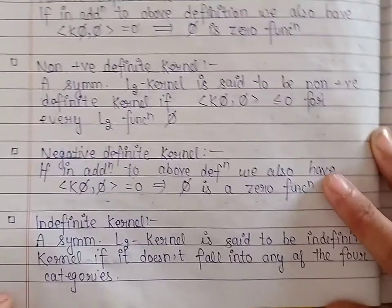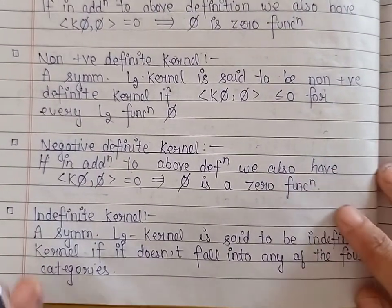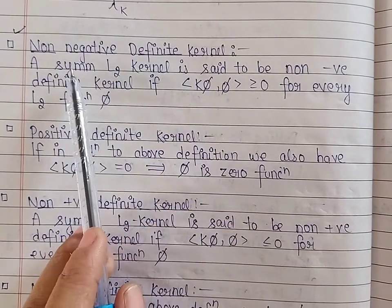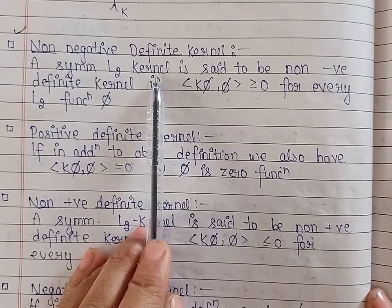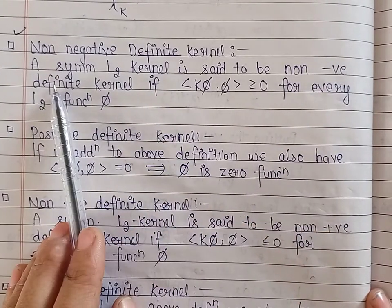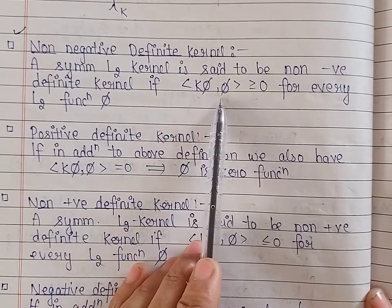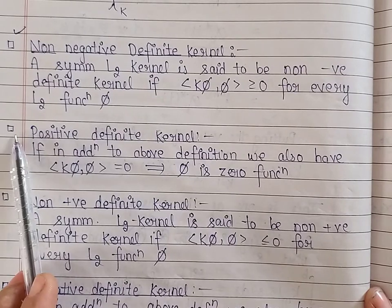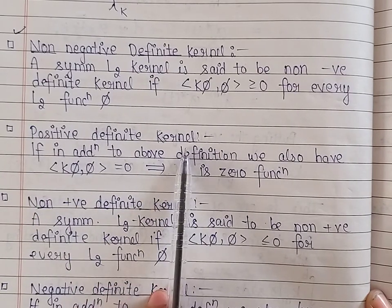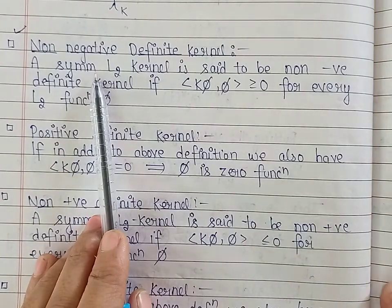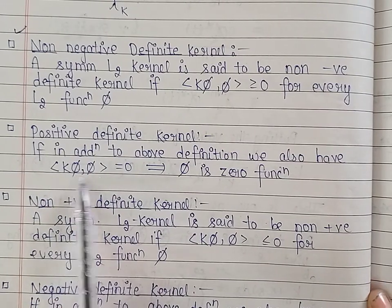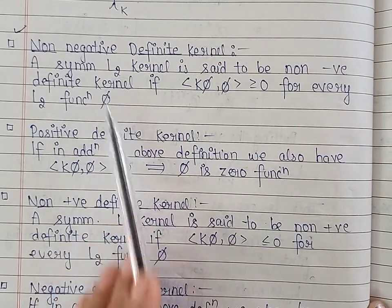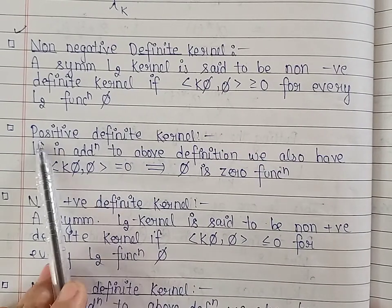Next are some definitions to be used in the next theorem. First, a symmetric square integrable kernel K(s,t) is a non-negative definite kernel if the inner product of K*phi with phi is non-negative for every square integrable function phi. For a positive definite kernel, we additionally require that if the inner product of K*phi with phi equals 0, then phi must be the null function.